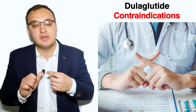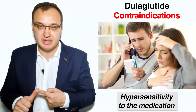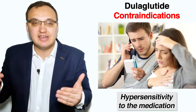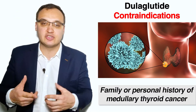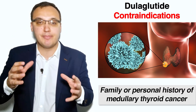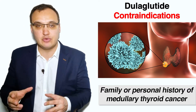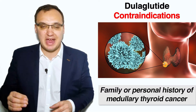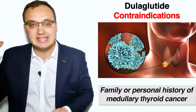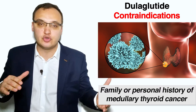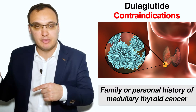One contraindication is if the patient has hypersensitivity to the medication — meaning, did the patient take dulaglutide before and have an allergy to it? If yes, never use dulaglutide again. For the next contraindication, details of the patient's medical history are essential because we have to ask if the patient has a personal or family history of medullary thyroid cancer.